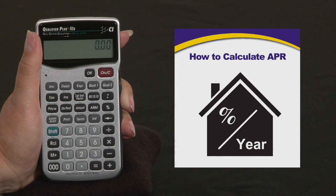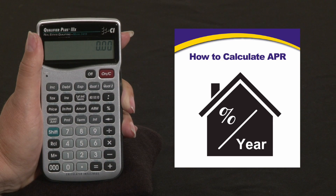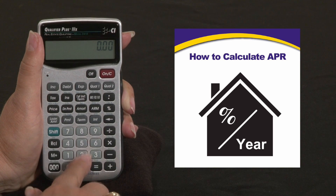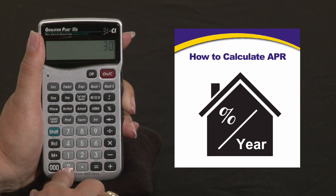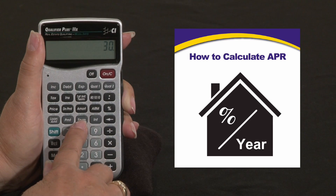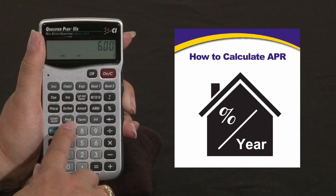The Qualifier Plus 3x desktop and FX also have the ability to calculate your annual percentage rate, or what we call APR. We're going to enter a $200,000 loan amount for 30 years, press term, and give it a six percent interest rate, then solve for our P&I.